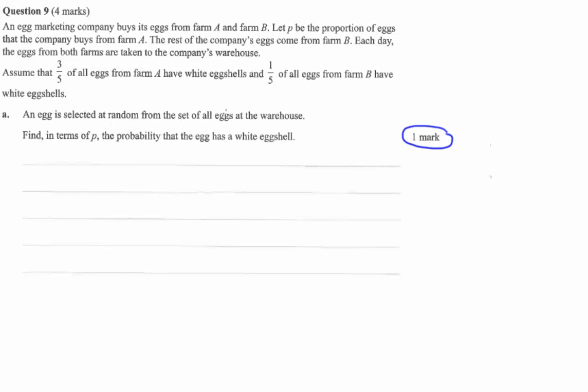And we select a random egg from our warehouse after we've sourced from the different farms. And we want to know the probability in terms of P that we get an egg with a white eggshell.